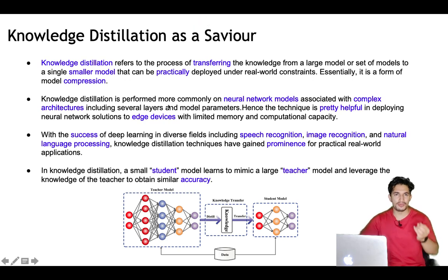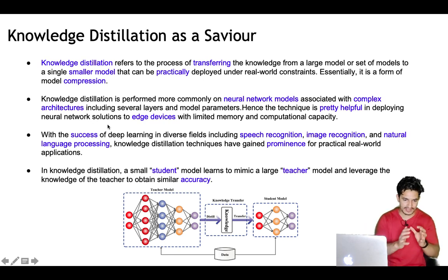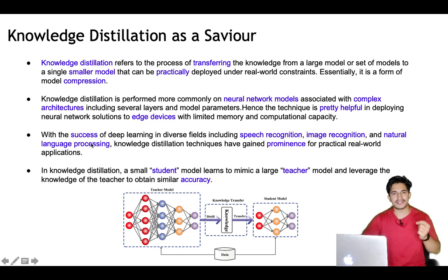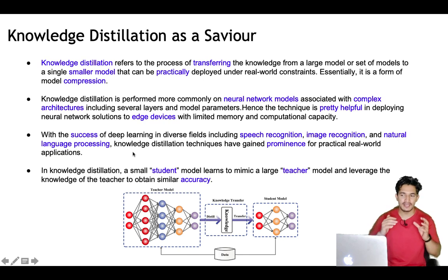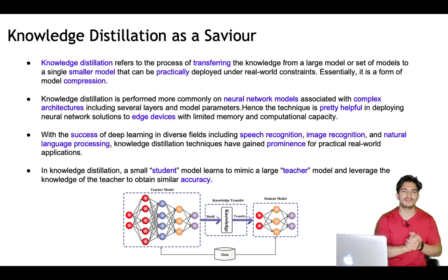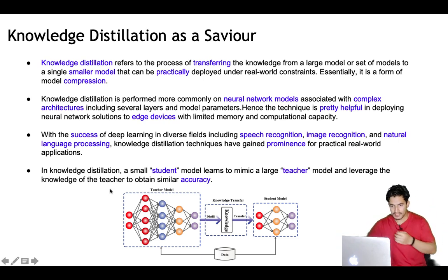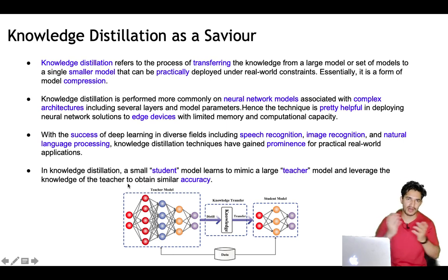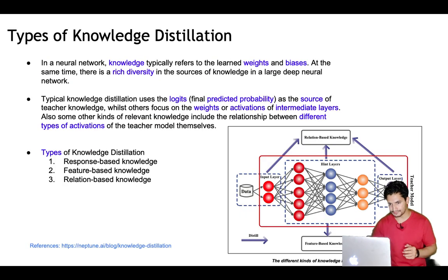Knowledge distillation is performed commonly on neural network models with complex architectures, and the technique is helpful in deploying neural network solutions to edge devices, because edge devices like mobile devices have limited memory and compute. As deep learning has seen success in speech, image, and natural language processing, knowledge distillation has gained prominence. You may have noticed that whenever models like BERT or Transformer are released, a distilled or smaller version is also released for real-world applications. In knowledge distillation, a smaller student model learns to mimic a teacher model and leverage its knowledge to obtain similar accuracy.